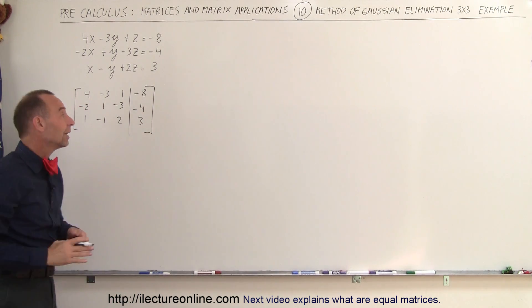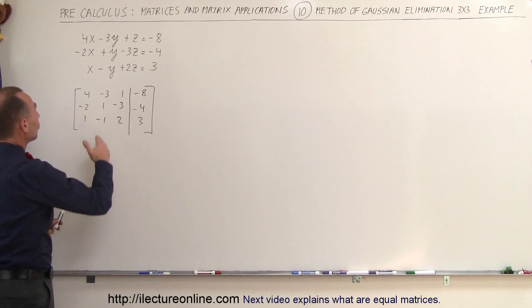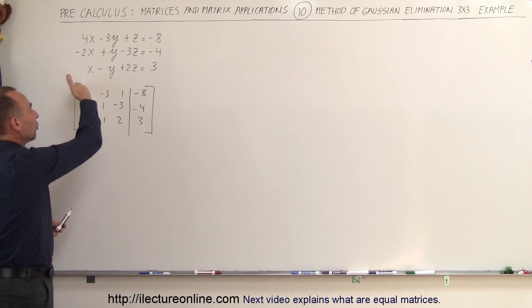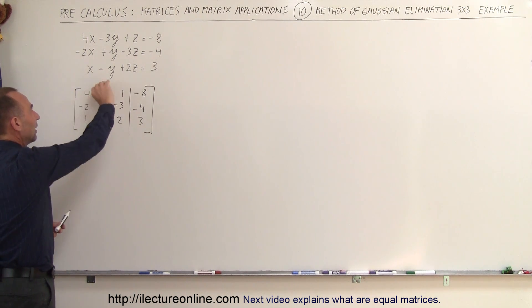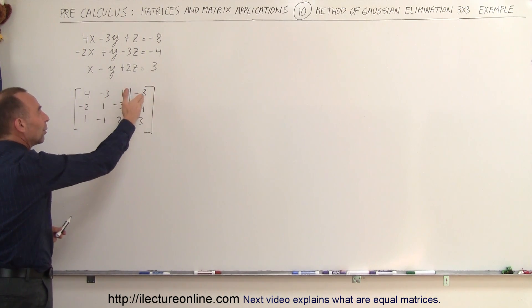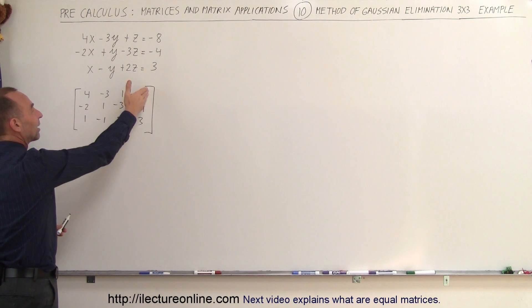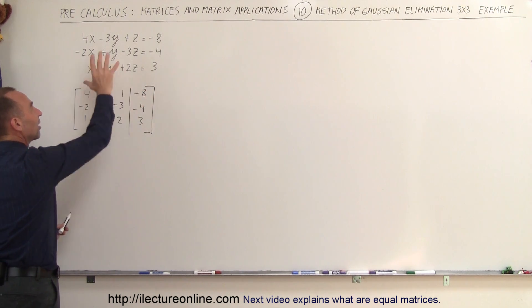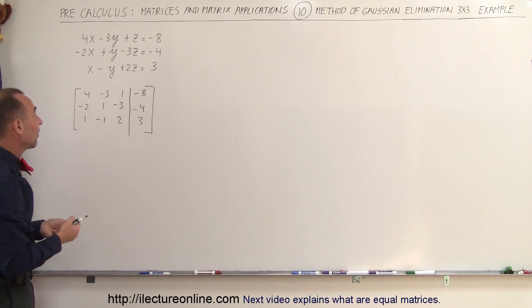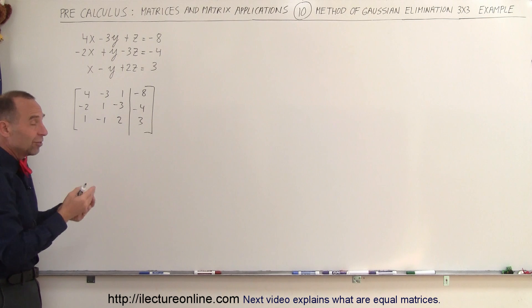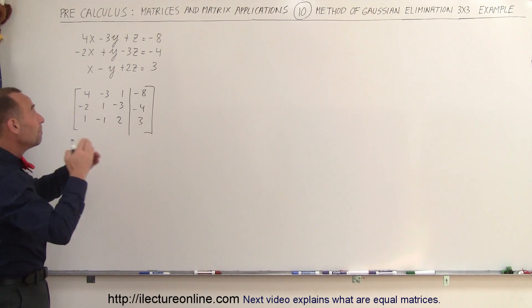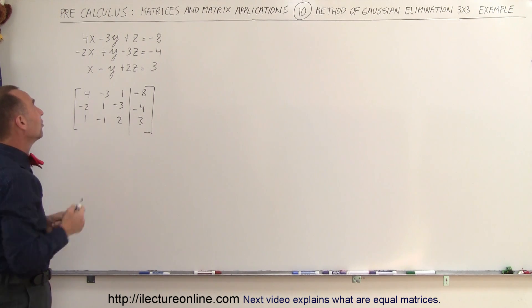Now the objective is to take all the diagonal numbers and turn them into 1s, with everything else in the matrix being 0. Then we read the values for x, y, and z that satisfy the problem. What we're trying to do is find the x, y, and z coordinates of the point where all three planes meet somewhere in space.